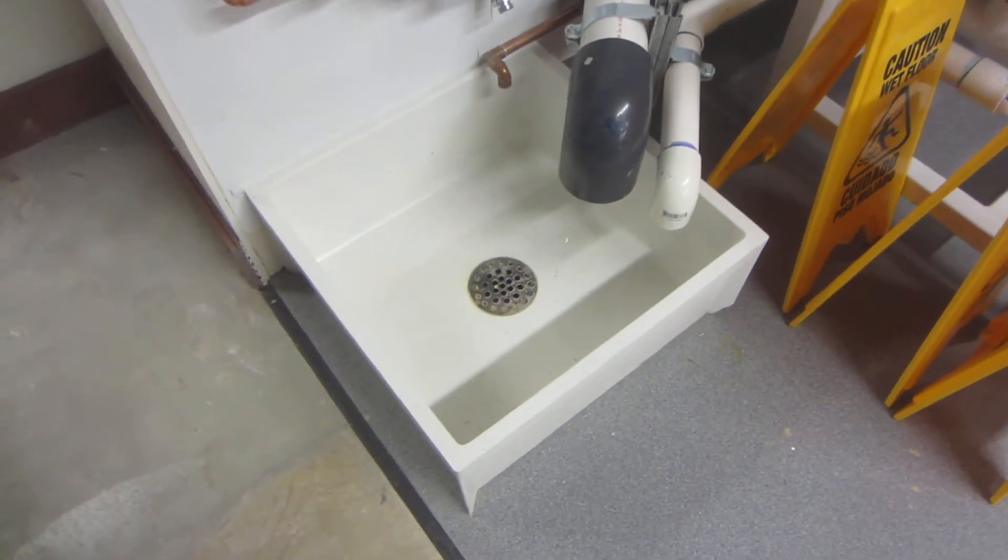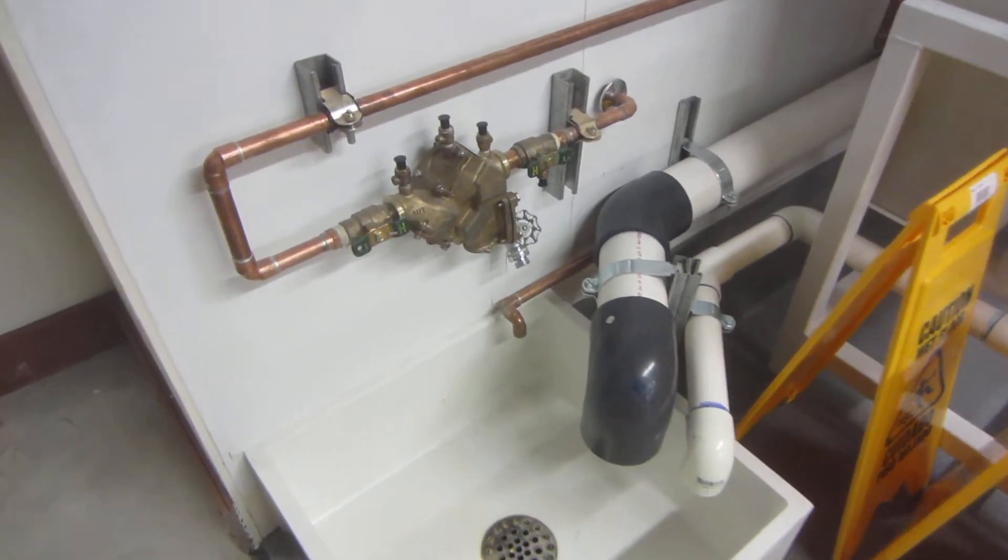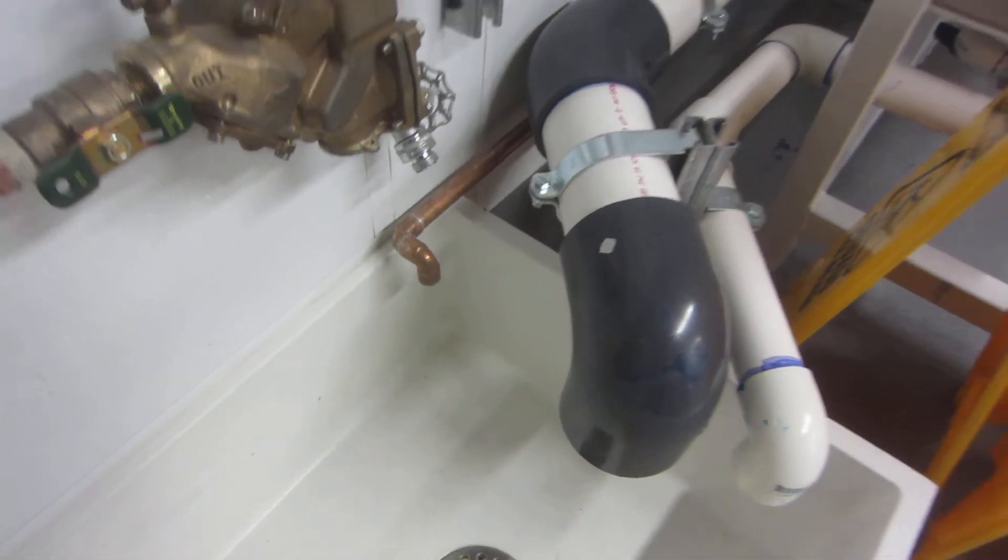This sink here is where the EVAC dumps out. A little bit of water will come out of that pipe there, that little copper pipe, as the system runs.